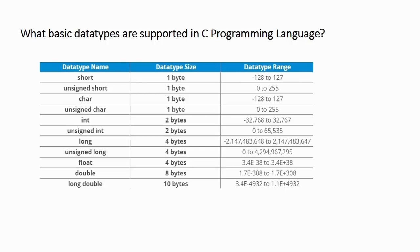First is short. It occupies one byte of size — that is eight bits of data — and it ranges from -128 to 127. Thus, we can store signed values into it, meaning both negatives and positives can be stored in short. Similar to short is unsigned short, which has the same size as short but stores only positive integers from 0 to 255.